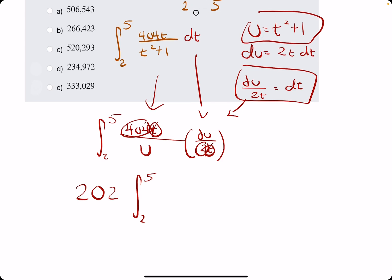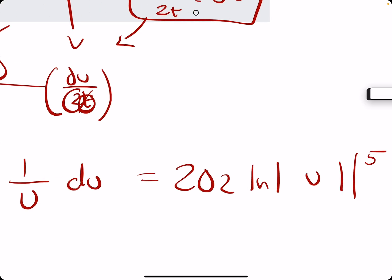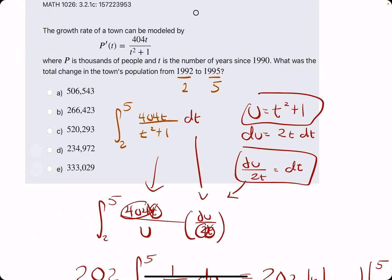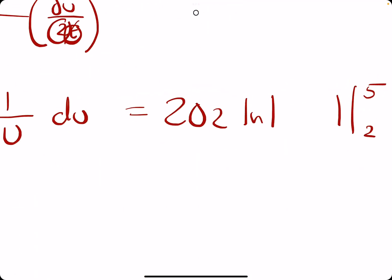404 divided by 2 is 202 times the integral from 2 to 5. Let me make sure that's right. 2 to 5, 1 over U, DU, which has an integral of 202 ln of U from 2 to 5. But again, we don't evaluate it from 2 to 5 until we get everything back in terms of T. So we replace the U with T squared plus 1.